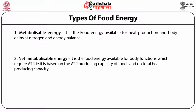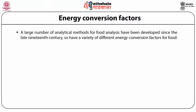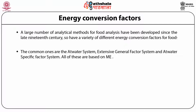The net metabolizable energy is the food energy available for body functions which require ATP, based on the ATP-producing capacity of foods and on total heat-producing capacity. A large number of analytical methods for food analysis have been developed since the late 19th century. The common energy conversion factor systems are the Atwater system, the extensive general factor system and the Atwater specific factor system.